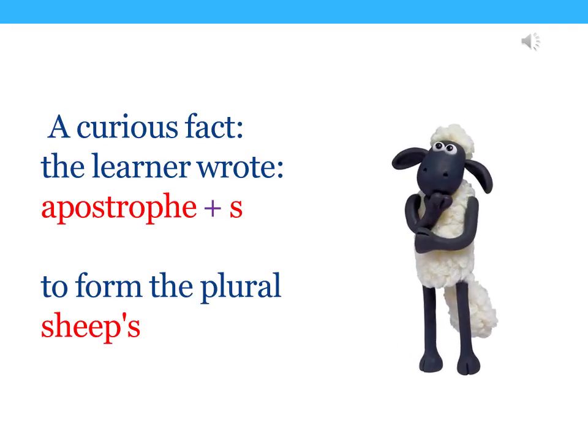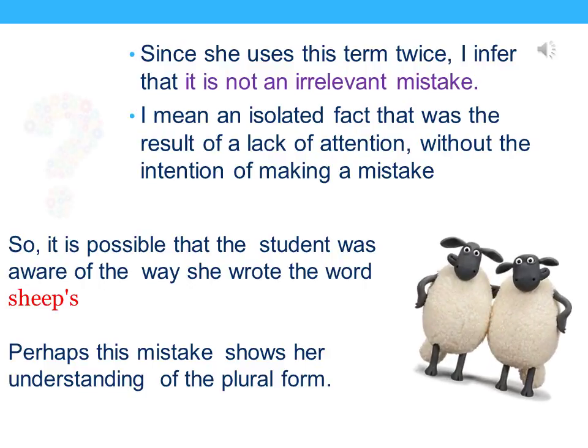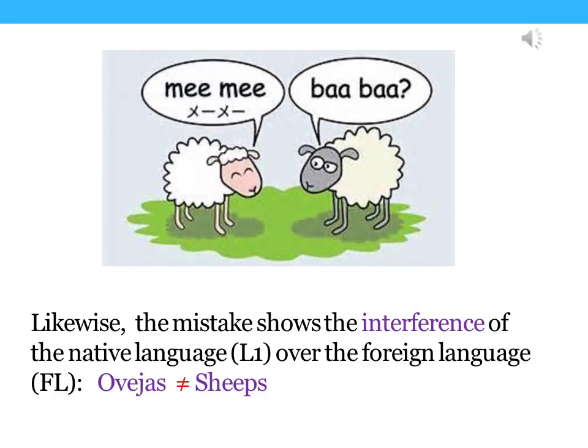A curious fact: the learner wrote an apostrophe plus s to form the plural 'sheeps.' Since she uses this term twice, I infer that it is not an irrelevant mistake — that is, an isolated fact that was the result of a lack of attention. So it is possible that the student was aware of the way she wrote the mentioned word. Perhaps this mistake shows her understanding of the plural form. Likewise, this mistake shows the interference of the native language over the foreign language.